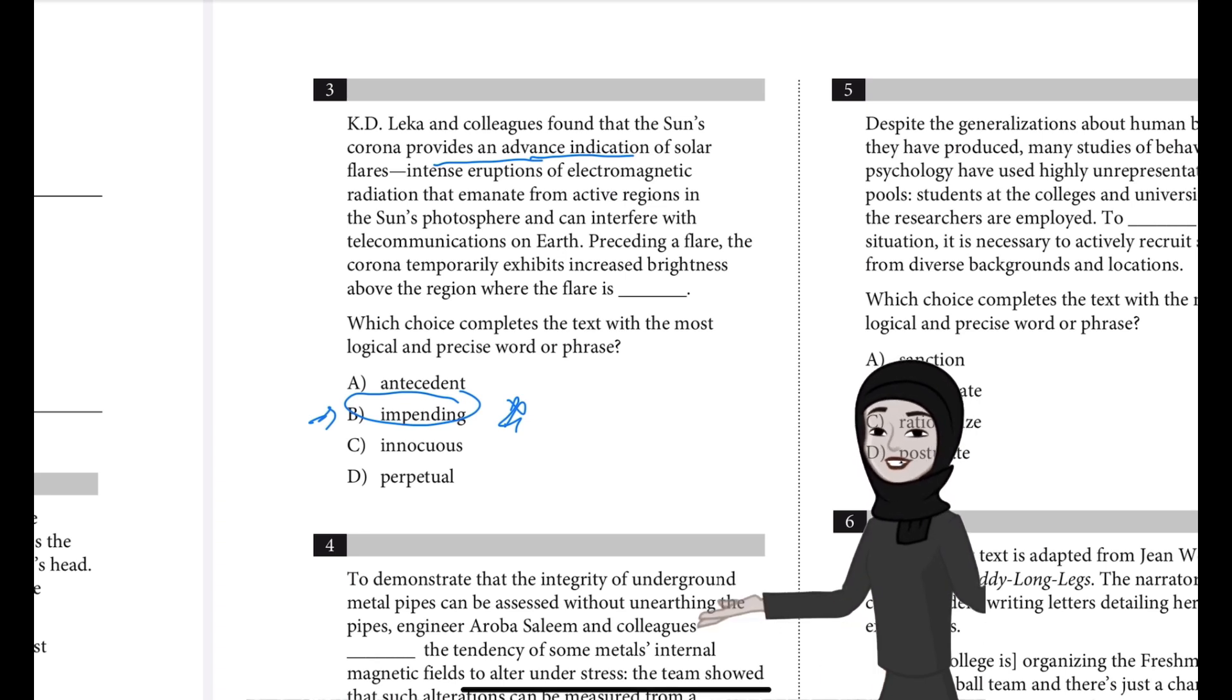The text mentions a study by Lekha and colleagues that found that the sun's corona provides an advanced indication of solar flares. The text then points out why such advanced indication would be useful. Why is it useful? Because solar flares can interfere with communications on Earth. And it concludes by describing the characteristic of the corona that gives warning of a solar flare.